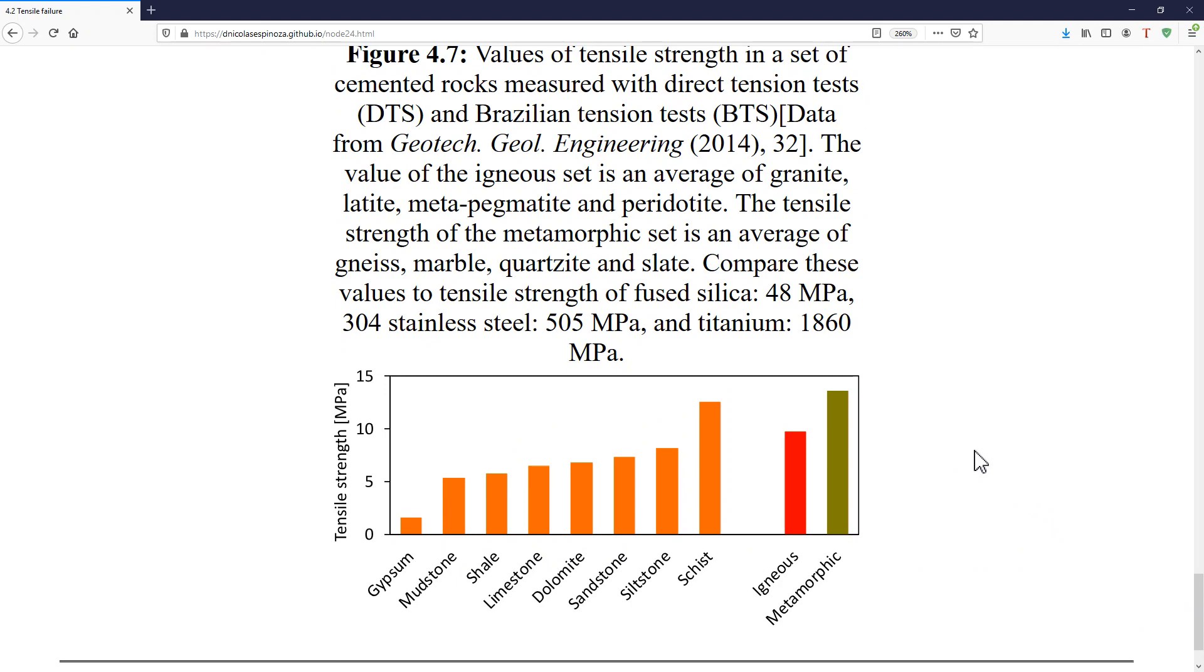What would be the tensile strength of uncemented sand? Well, if it is uncemented, then it means that there is no cementation between grains, and if there is no cementation, nothing holding the grains to each other, the tensile strength is going to be zero. So, there are many materials that I'm now putting in this summary that they do have a tensile strength which is zero or equal to zero. For example, you could have a fractured rock mass where the tensile strength is going to be zero when you are pulling in direction perpendicular to the plane of the fractures.